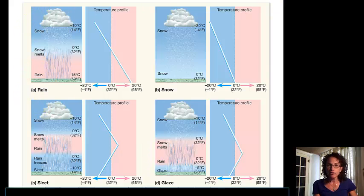Here we have a figure from your textbook that is illustrating formation process of rain, snow, sleet, and glaze. Notice in each of these graphs we have a temperature profile. Blue indicates freezing,